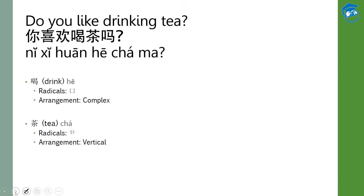Let's see the first sentence of the whole conversation. 小林 first asks: do you like drinking tea? 小林问，你喜欢喝茶吗? There are two new words. The first new word is 喝. 喝 means drink. The pinyin is 喝, and the radical is the component on the left.